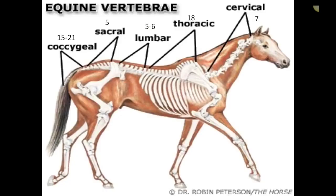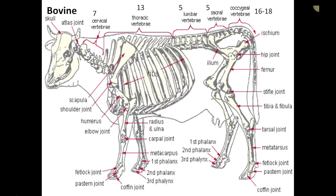Looking at the equine vertebrae: cervical 7, thoracic 18, lumbar 5–6 depending on breed, sacral 5, and coccygeal 15–21. Likewise with the bovine: cervical 7, thoracic 13, lumbar 5, sacral 5, coccygeal 16–18.